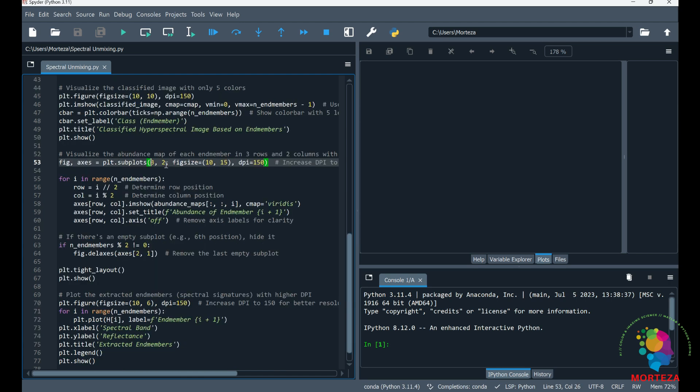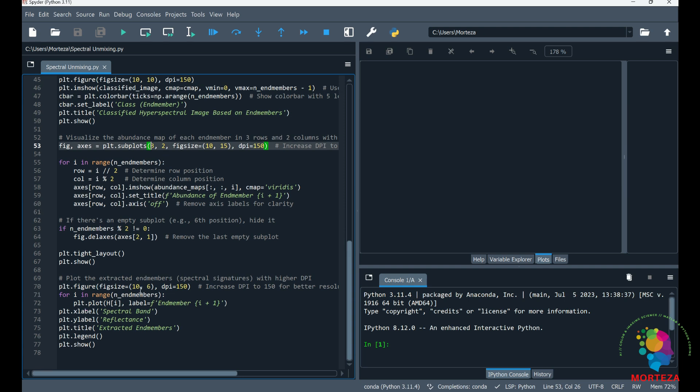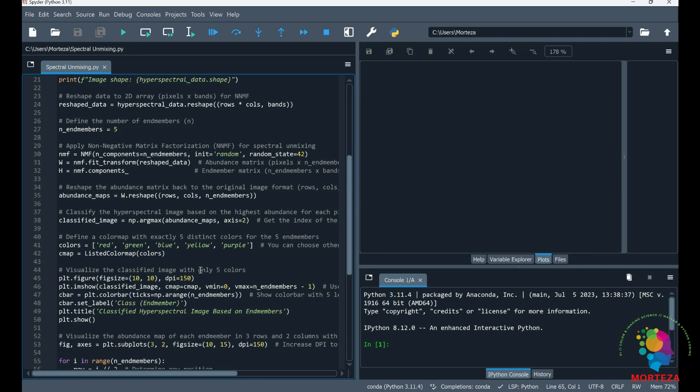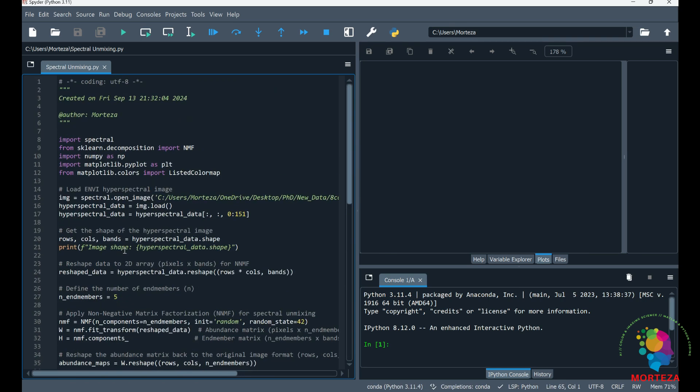And here I'm visualizing the abundance map of each endmember separately. And at the end, I'm going to also be plotting the extracted endmembers as shown here. So very simple. Let's run it and see what happens.